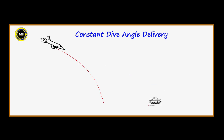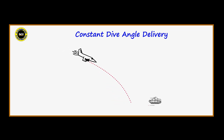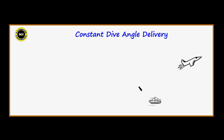As the pilot flies along his dive line, the bomb impact point moves along the ground. If the pilot wants to hit the target, he just has to wait until the bomb impact point intersects with the target, and voila — the bomb falls and hits the target.